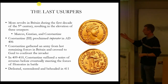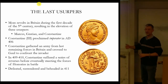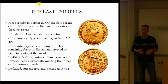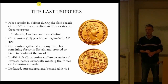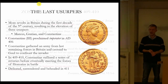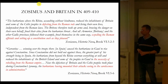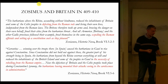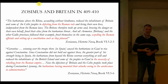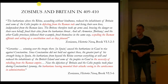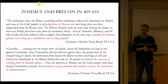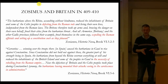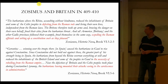The history of the beginning of the end then moves on to the final usurpers — Marcus, Gratian, and Constantine. That's a lovely coin, a gold solidus of the Emperor Constantine the Third, defeated, surrendered, and beheaded in 411 thereabouts. Roman Britain did end — we can't argue that there wasn't an end to the Roman period in Britain. It ended politically and we can date that reasonably well. Our obsession with dates, though, is perhaps unnecessary.